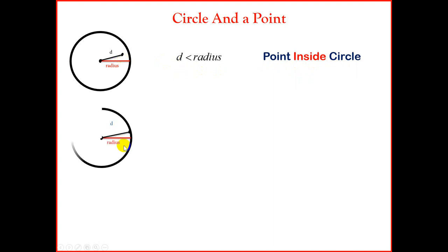Let's look at case 2. If the distance between the center of the circle and the point is equal to the distance of the radius, then our conclusion is that the point lies on the circumference of the circle.